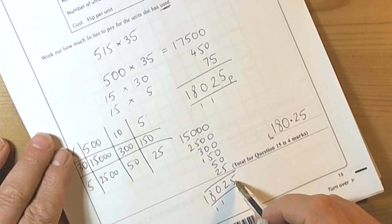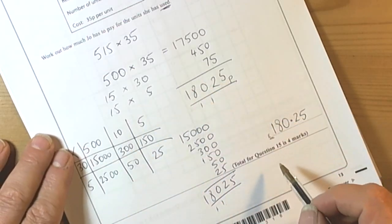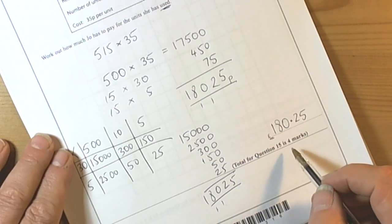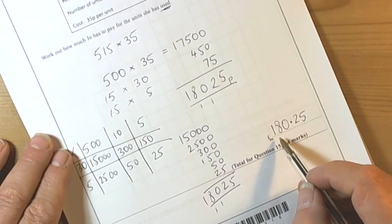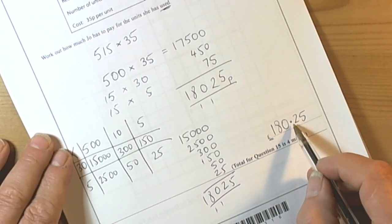So again we get 18,025. Always worth doing a couple of ways and then you can confirm you are going to get the correct answer. So 180 pounds and 25p.